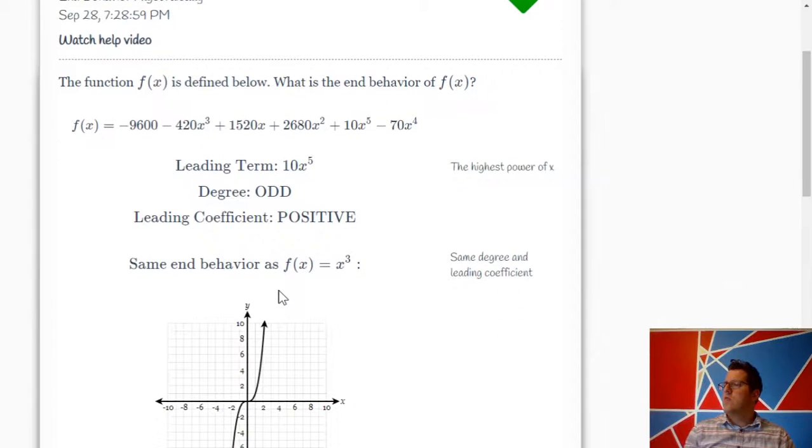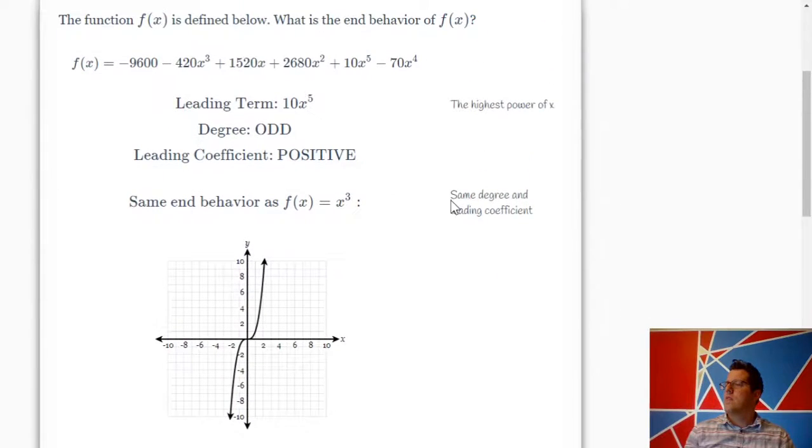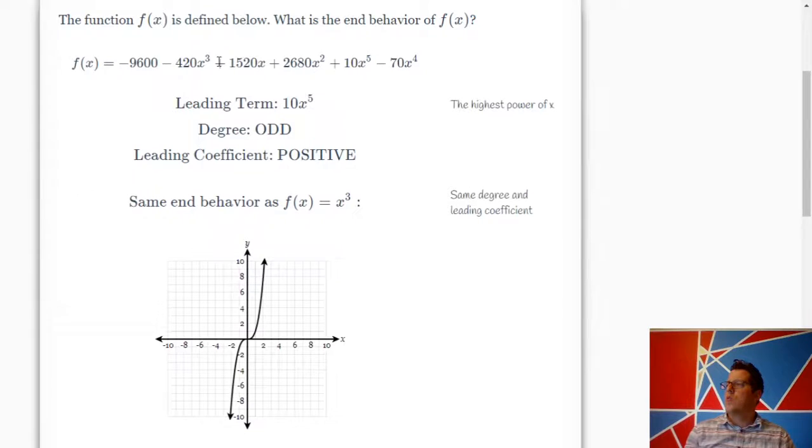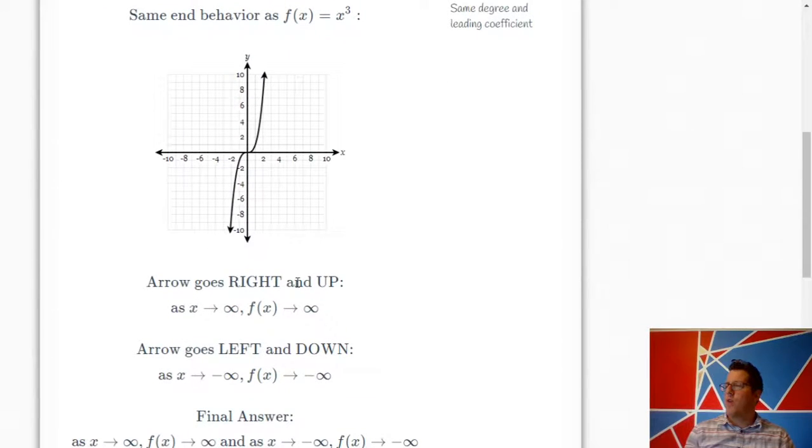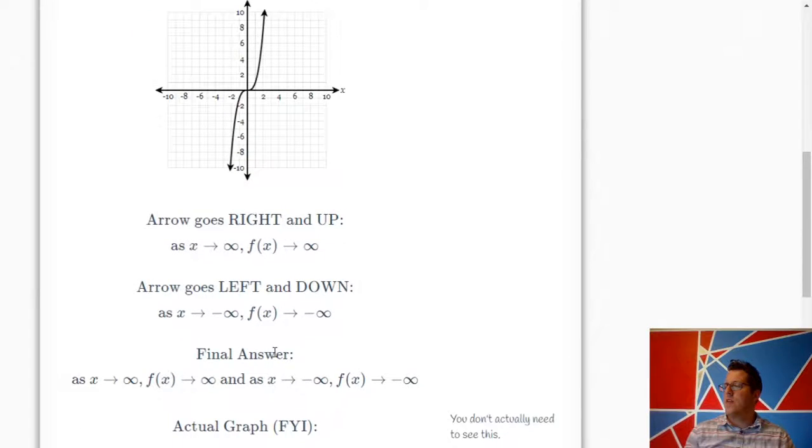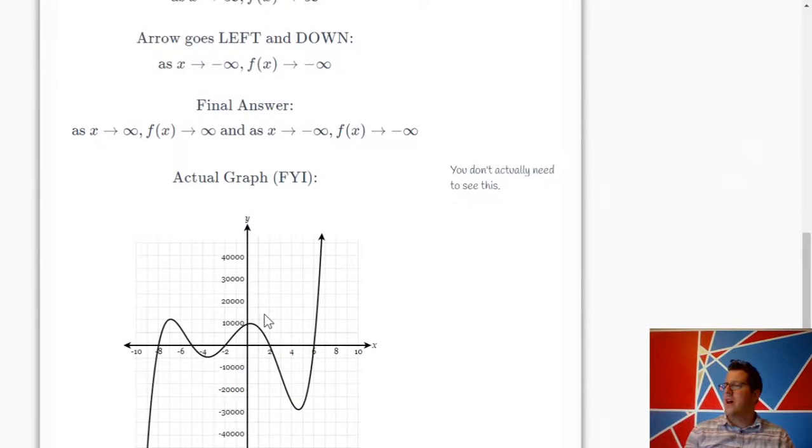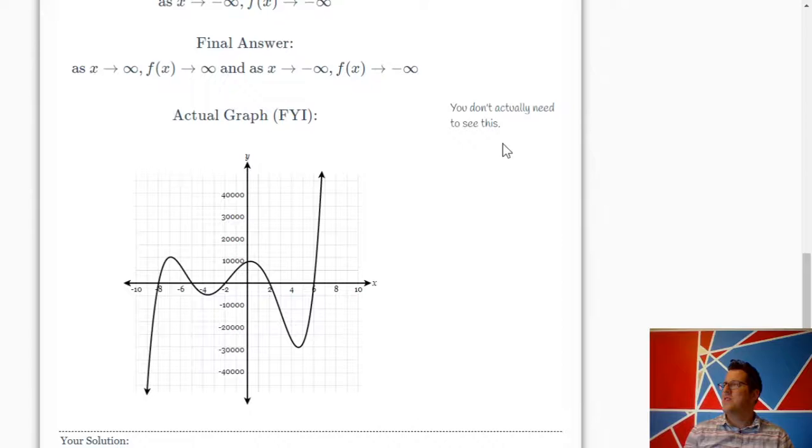So this is really all you have to think about. I like this. Same as x cubed. Arrow goes right and up. Arrow goes left and down. Actual graph, FYI. You don't actually need to see this. This is great.